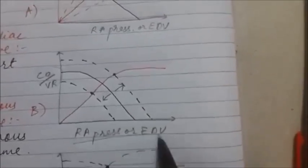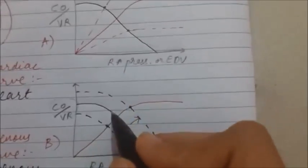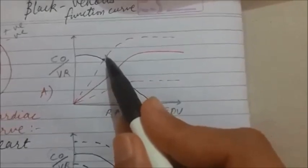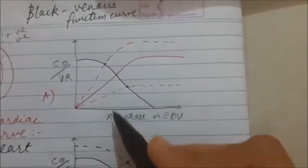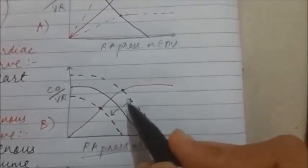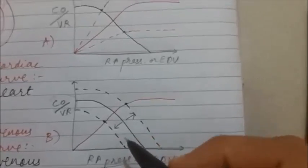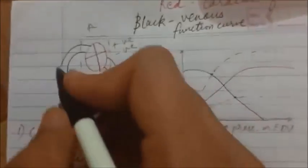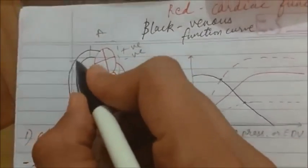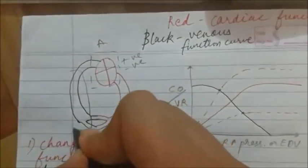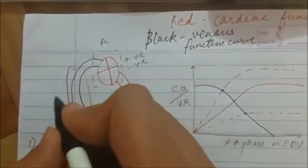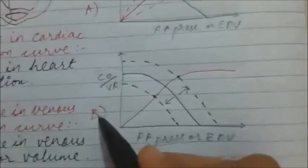Just focus on which curves are changed. If the cardiac function curve is changed, it will surely be positive or negative inotropy. If the venous vascular function curve is changed, it will surely be related to a change in venous return. Let's mark the venous side as B.